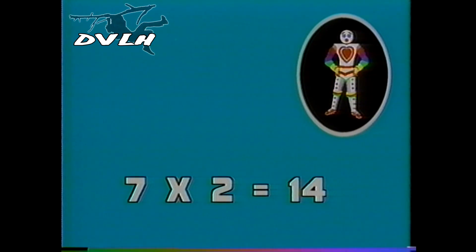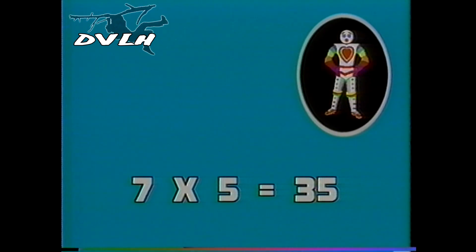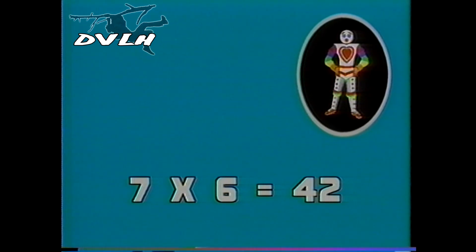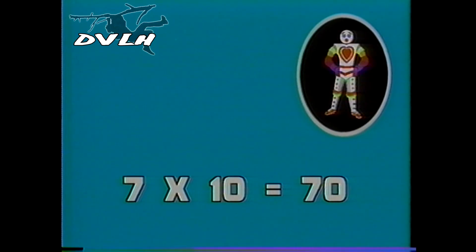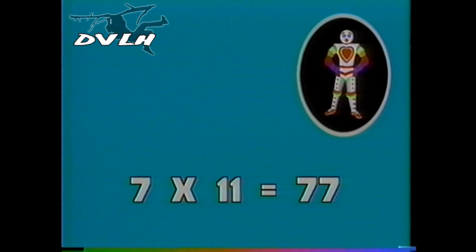Hey! Here come the tables of sevens! Seven times one is seven. Seven times two is fourteen. Seven times three is twenty-one. And seven times four is twenty-eight. Seven times five is thirty-five. Seven times six is forty-two. Seven times seven is forty-nine. And seven times eight is fifty-six. Seven times nine is sixty-three. And seven times ten is seventy. Seven times eleven is seventy-seven. And seven times twelve is eighty-four.